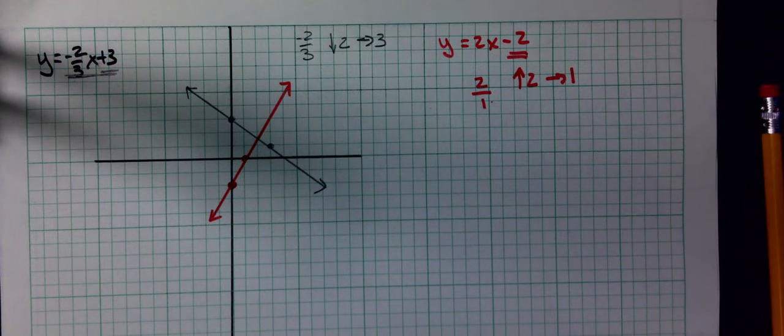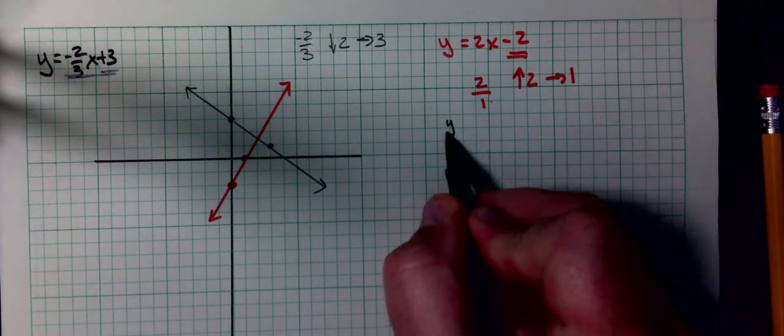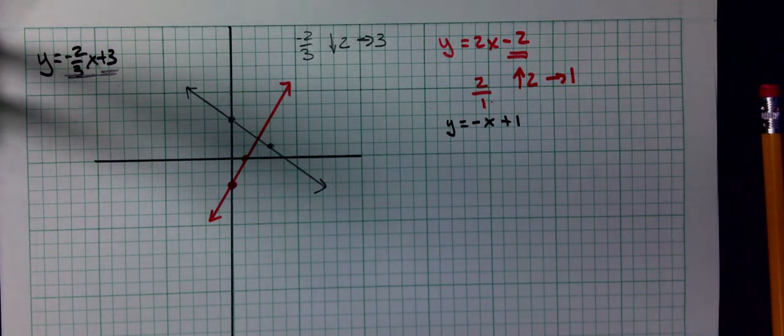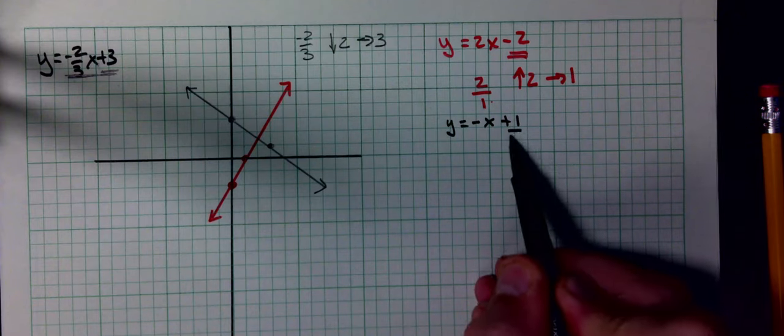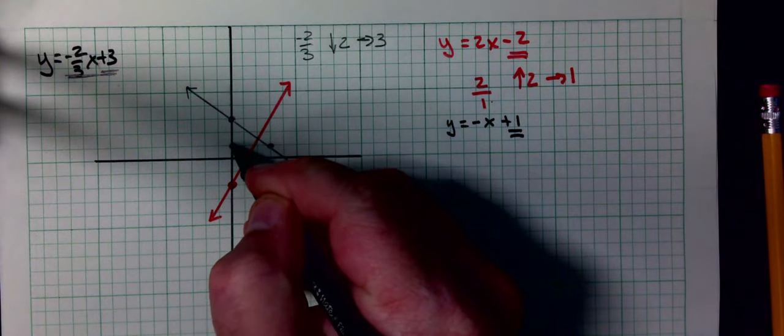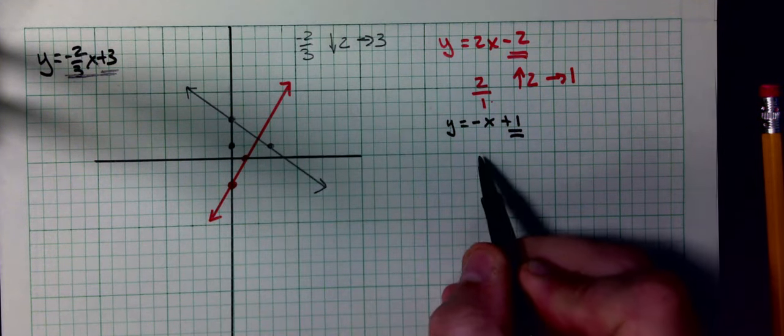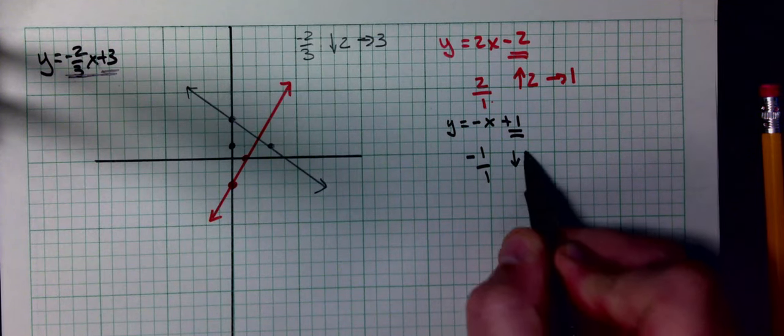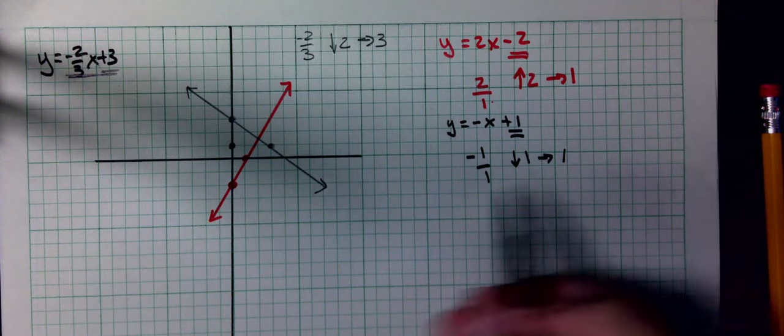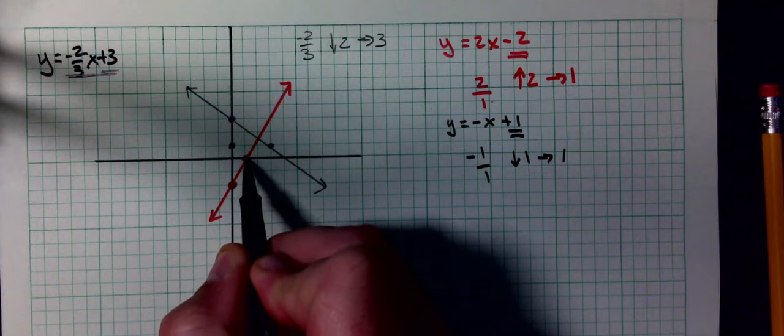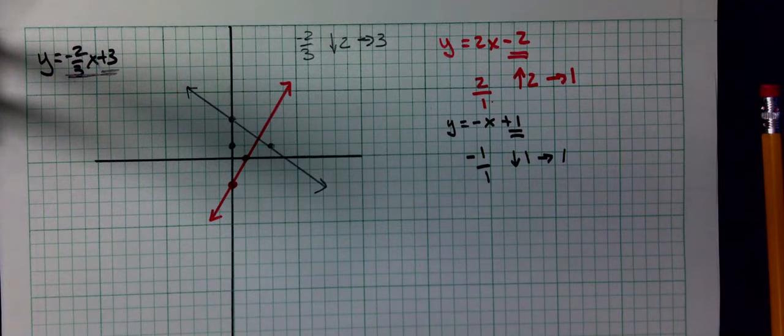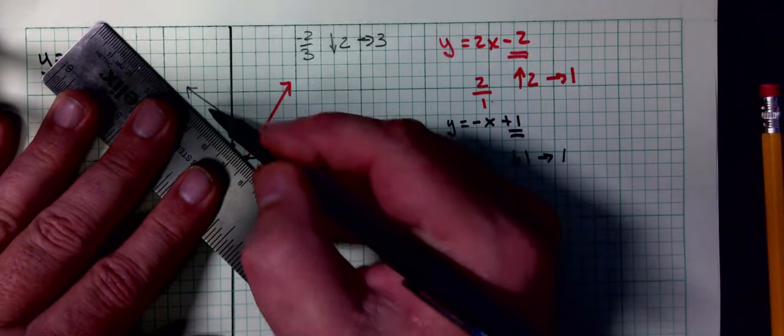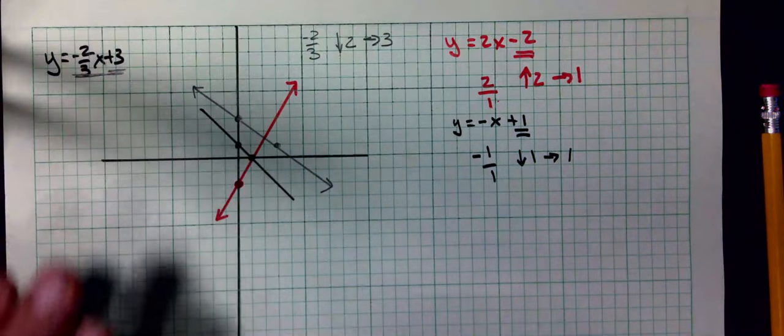I'll do the third one in black, which is y equals negative x plus 1. That means I have a y-intercept of 1. I have a slope of negative 1 over 1. To the right one, down 1. To the right one, down 1. And that's going to give me this line.